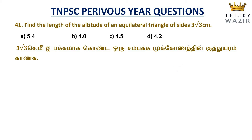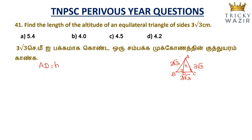In an equilateral triangle, all sides are equal to 3 root 3. We label the vertices A, B, C, and D where D is the foot of the altitude. The altitude bisects the base, so BD is equal to half of BC. Since BC equals 3 root 3, BD equals 3 root 3 divided by 2. The altitude AD is equal to h.